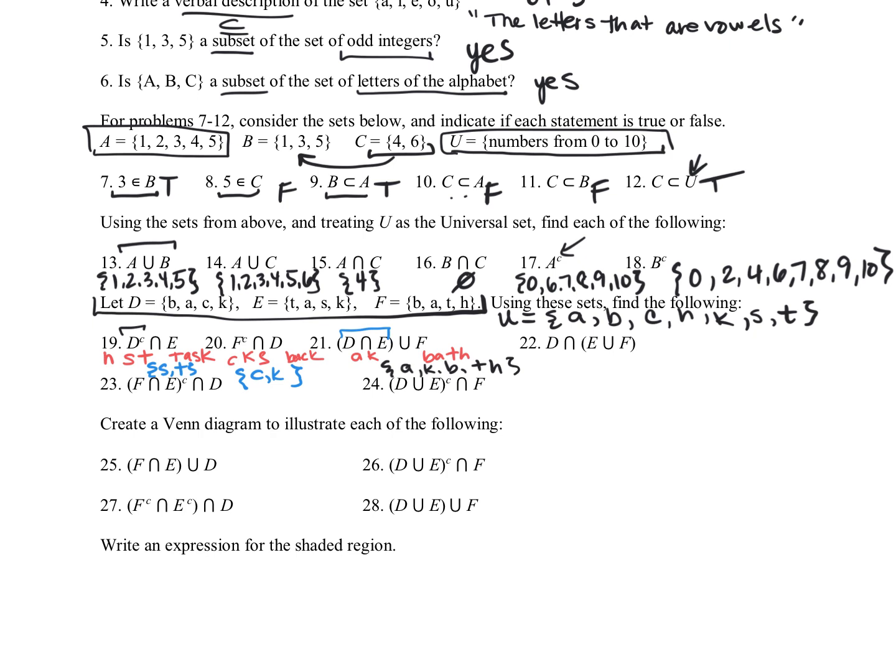For twenty-two, let's look at the parentheses first. So E union with F, that's going to be T, A, S, K, B, H. But we still have to intersect it with D. So D was back. So we want to know what they have in common. They both have a B, they both have an A, they don't both have C, they both have K. So we're just going to have B, A, K.